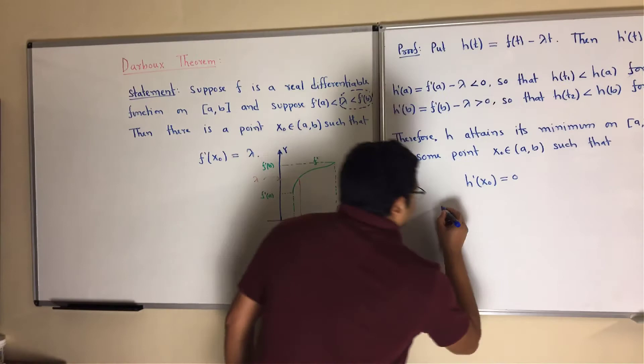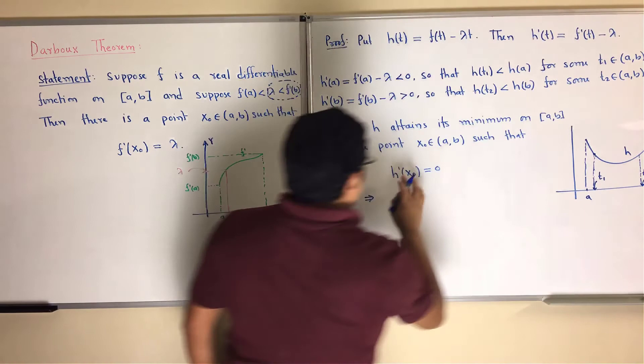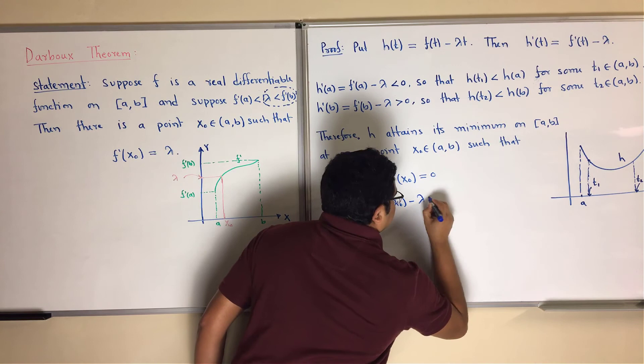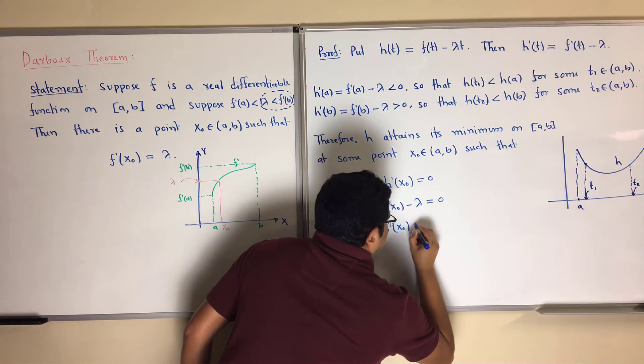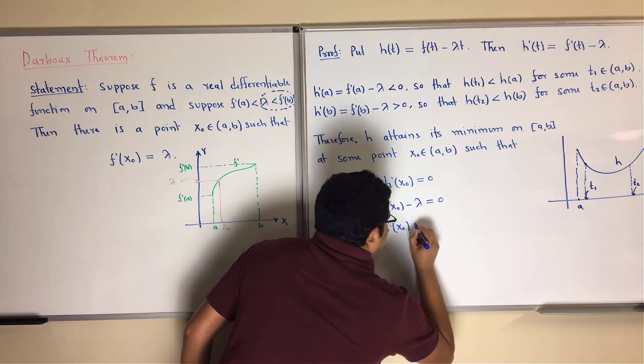At a maximum or minimum point, the first derivative is always zero. Since h prime of t equals f prime of t minus lambda, we have h prime of x0 equals f prime of x0 minus lambda equals 0, which gives f prime of x0 equals lambda. This is exactly what we needed to prove, and so the proof of Darboux's theorem is complete.